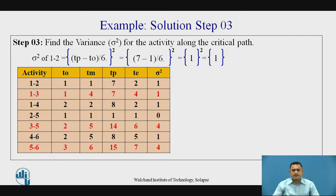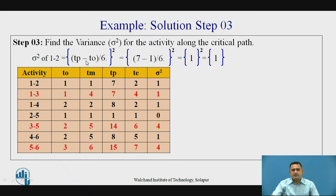The third step is finding the variance. We calculate the variance for each activity — not only along the critical path but for every activity. In the last column we get the variance using the formula: Variance = ((Tp - To) / 6)². Each activity's variance is listed accordingly.